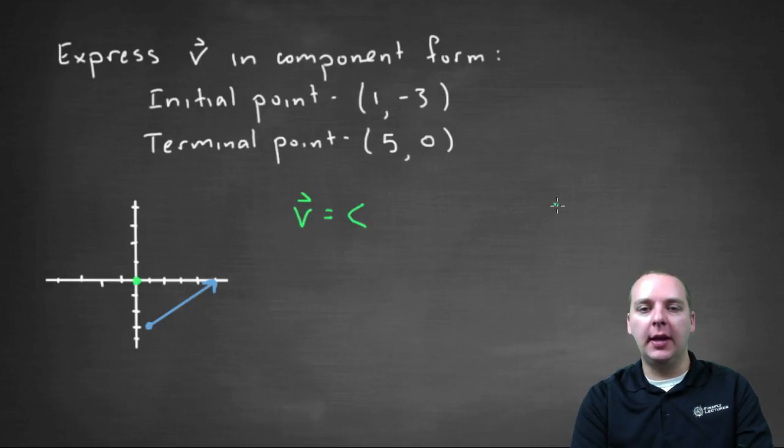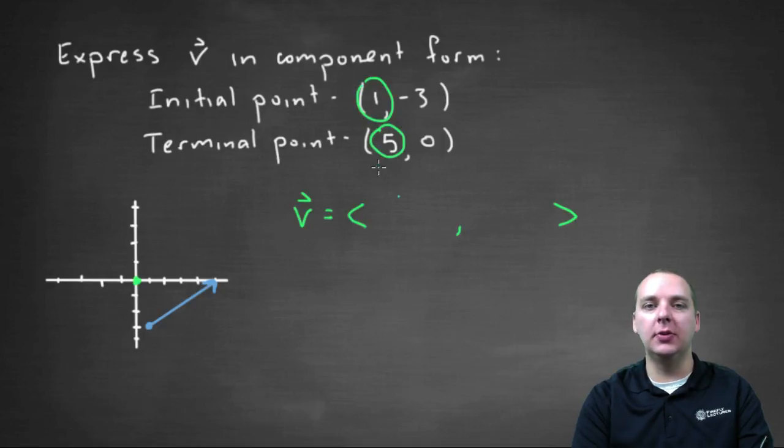A vector in component form has a first component and a second component. To get the first component you're going to take the terminal x value minus the initial x value. So we'll take five minus one.